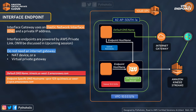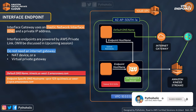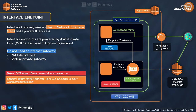With interface endpoints, you can talk to AWS services without needing NAT gateways, NAT devices, or virtual private gateways. Once you've created the interface endpoint using the ENI, your instance can access Kinesis Data Streams privately using the endpoint-specific DNS hostname — something like vpce-123.kinesis.us-west-2.vpce.amazonaws.com — which uses the private IP from your VPC's subnet.